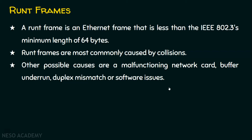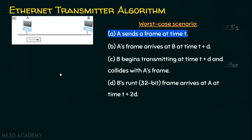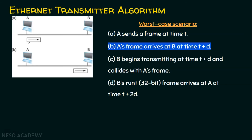Let's see the worst case scenario of the Ethernet transmitter algorithm. In scenario A, host A sends a frame at time t. A's frame arrives at host B at time t plus d, where d is the delay, which includes both transmission delay and propagation delay.